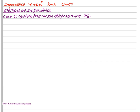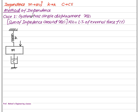So for mass the impedance is ms², for spring the impedance is k, and for damper the impedance is cs. We are using the method of impedance, which is a straightforward method. The first case is when the system has a single displacement x(t). According to the impedance method, the sum of impedances around x(t) multiplied by X(s) equals the Laplace transform of the external force.